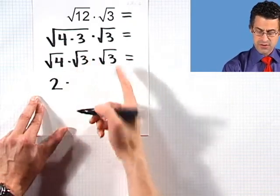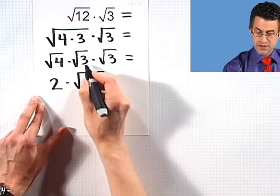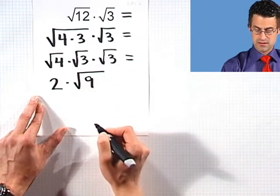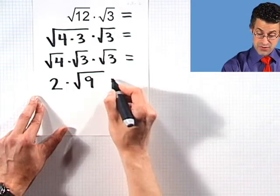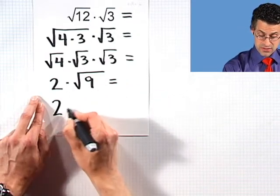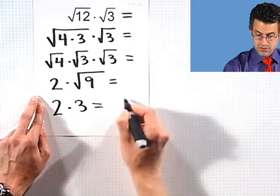And the square root of 3 times the square root of 3, that's the square root of 3 times 3, which is 9. But wait, the square root of 9 is just 3. So in fact, this is just 2 times 3, which equals 6.